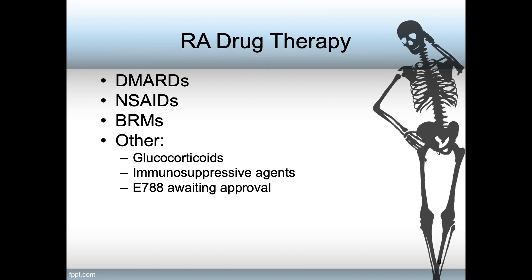You should observe for the desired therapeutic drug effects, such as decrease in joint discomfort and swelling. Monitor the patient for potential adverse effects, such as decreasing WBCs and platelets, or elevation in liver enzymes and serum creatinine. NSAIDs are sometimes used for RA to help promote comfort and decrease inflammation, and the NSAID of choice depends on the patient.